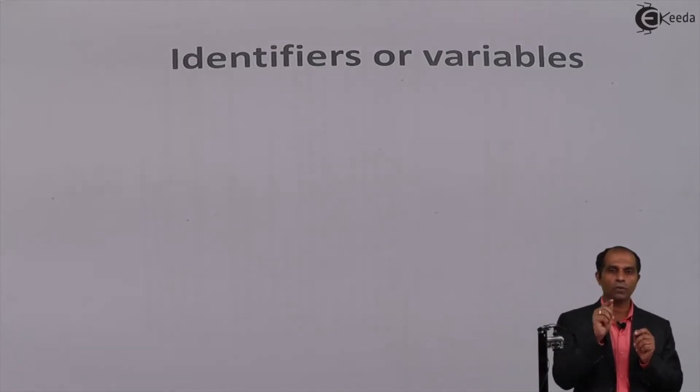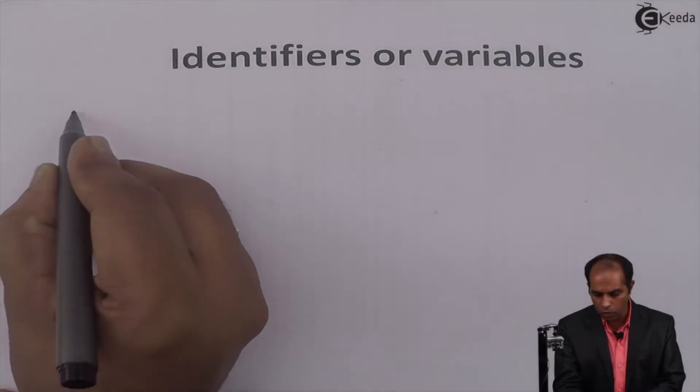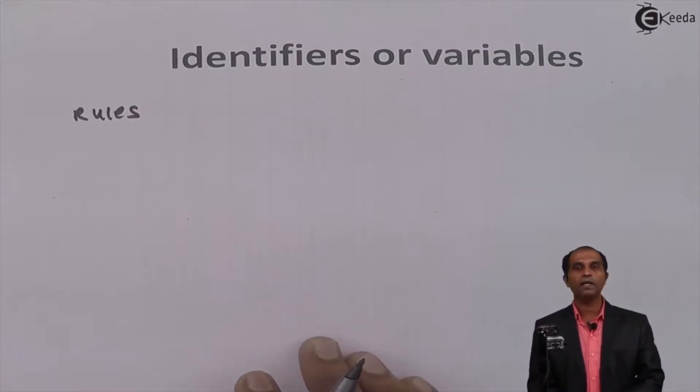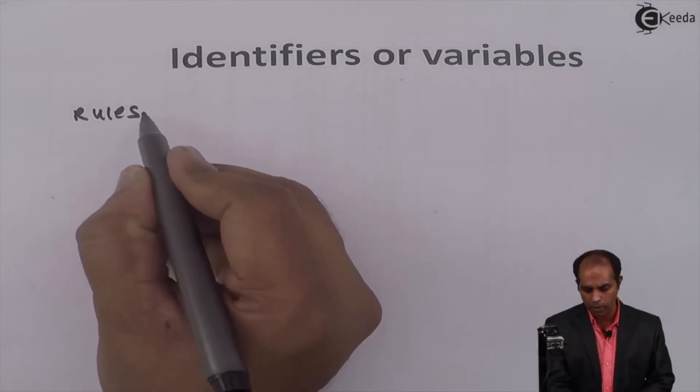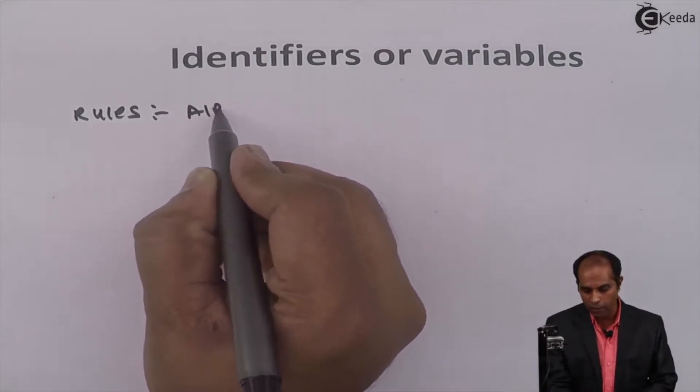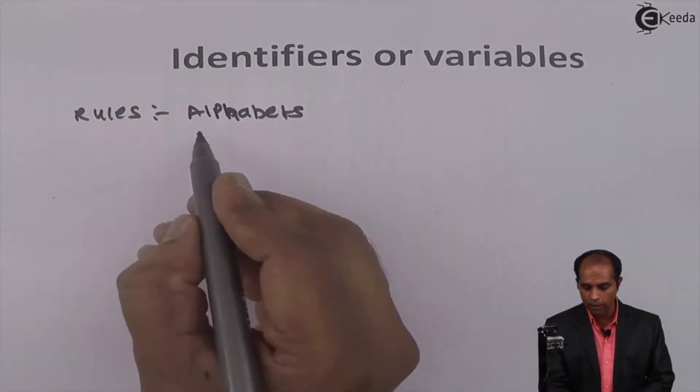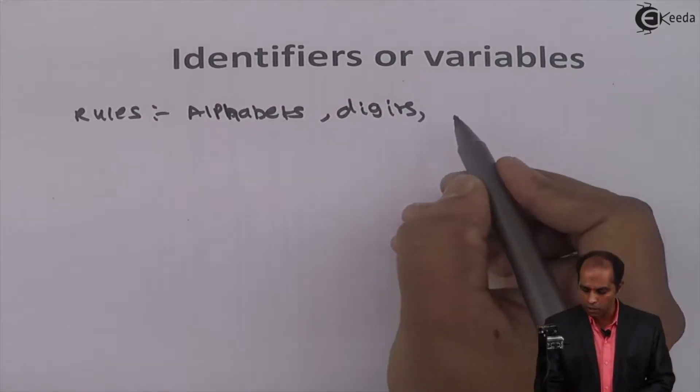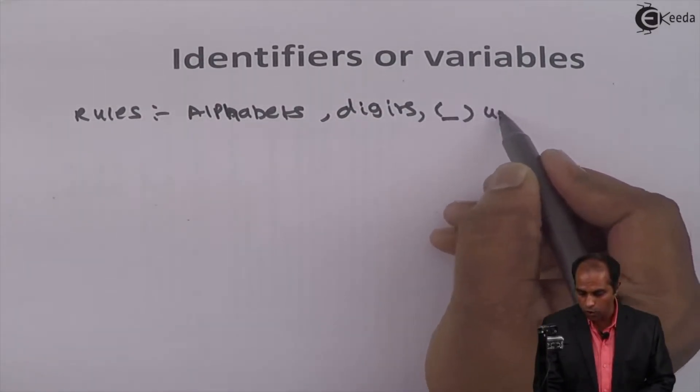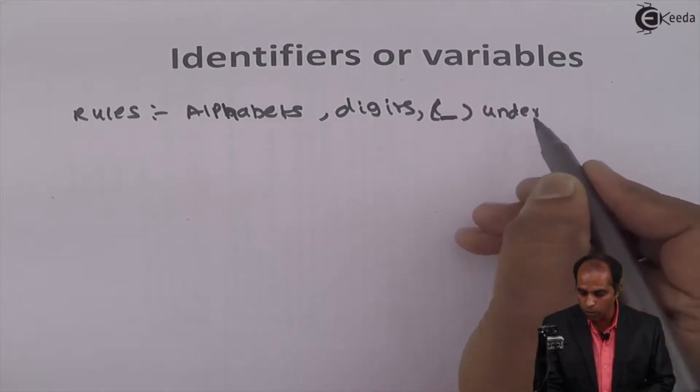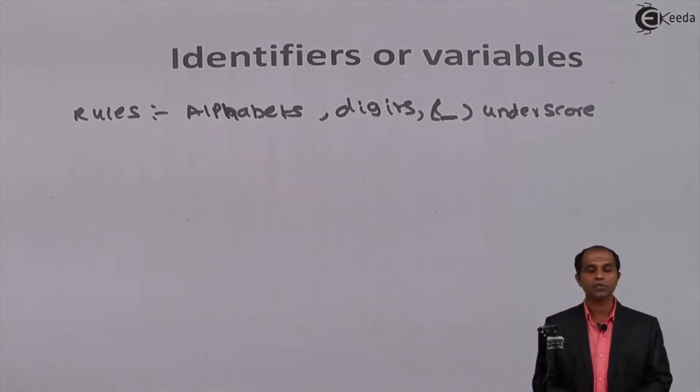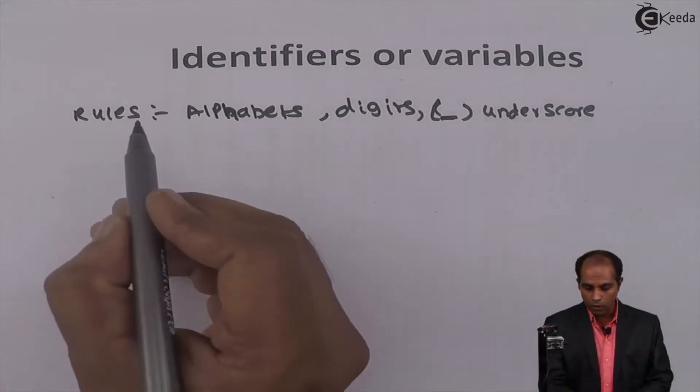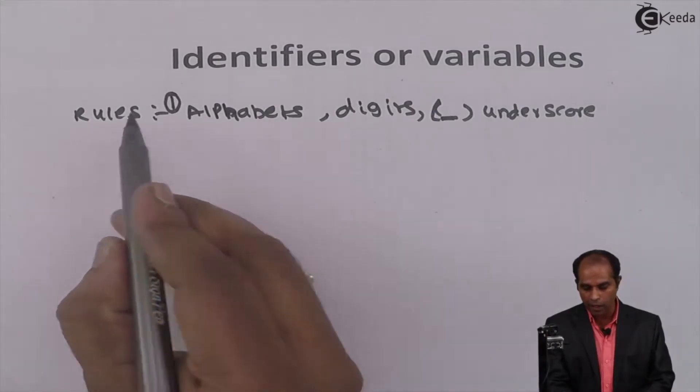What are the rules for writing a valid variable name? The very first thing I'm supposed to remember is it should be made up of alphabets or digits. Only one special character is allowed: underscore. You have to write a hyphen symbol on the bottom of your line, which is called underscore. So the first rule says that an identifier can be a combination of alphabets, digits, and the special symbol underscore.